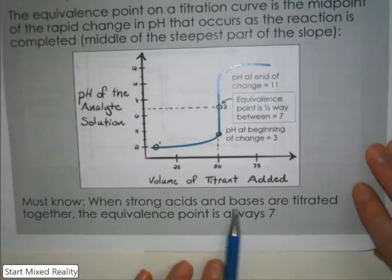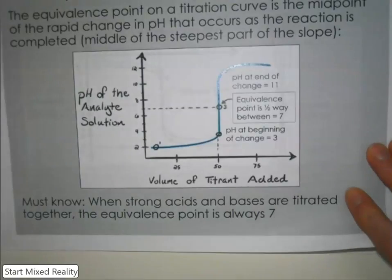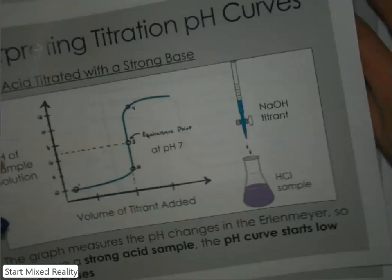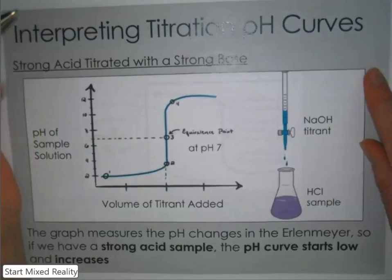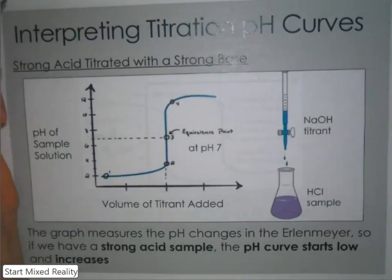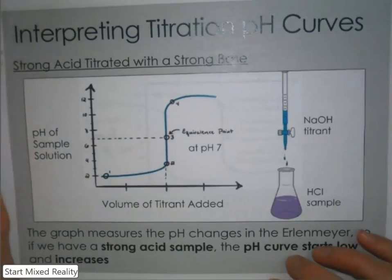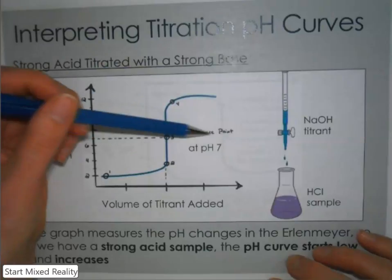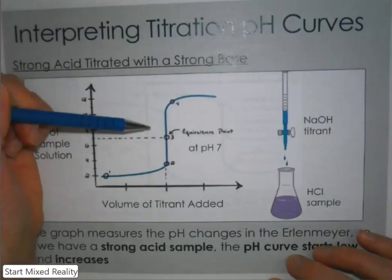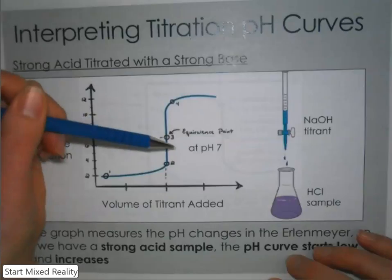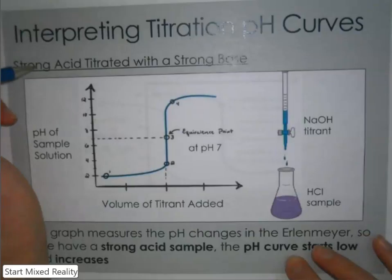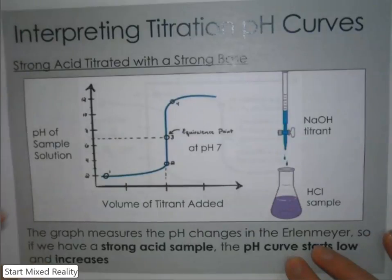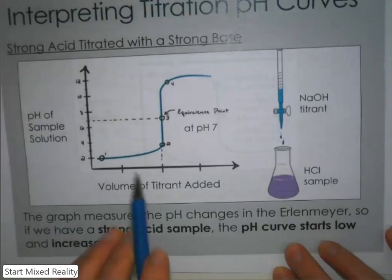When strong acids and bases are titrated together, the equivalence point is always at pH 7. When you do a written question on a test for this, you will have to identify the equivalence point — so make sure you not only mark it but write down 'pH = 7' for it.